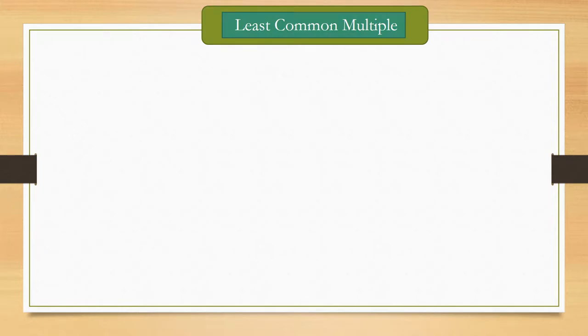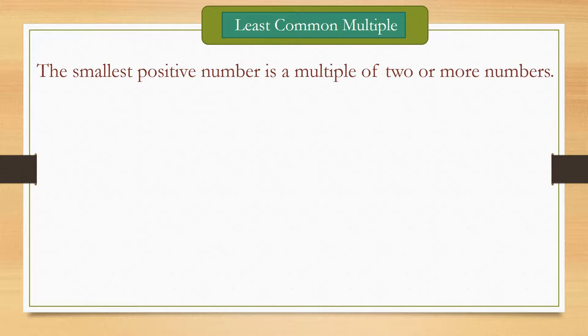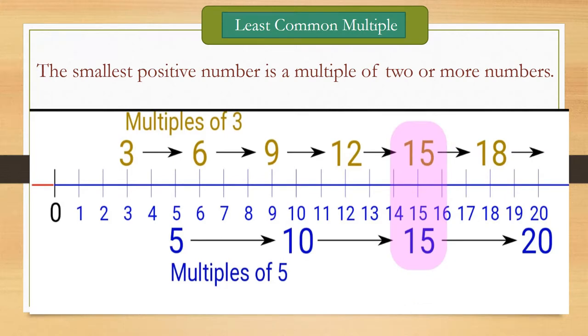Today we will discuss about least common multiple. What is it? The smallest positive number is a multiple of two or more numbers.